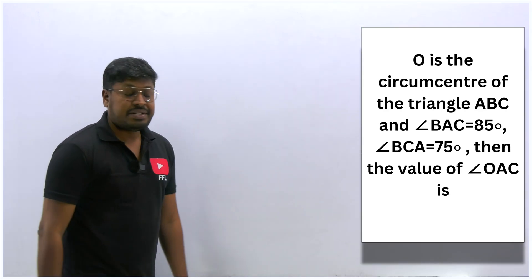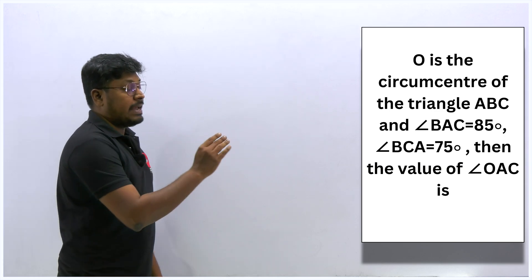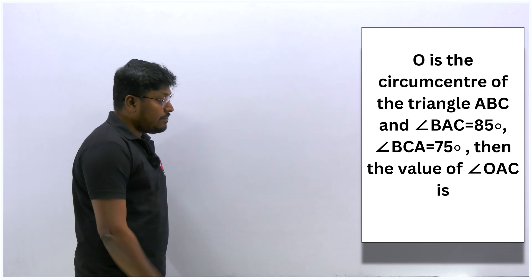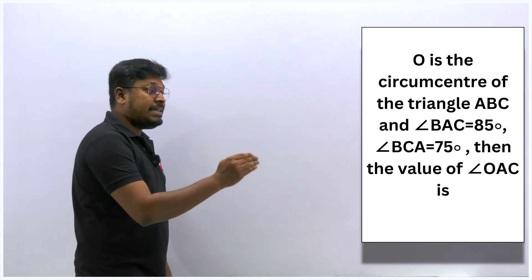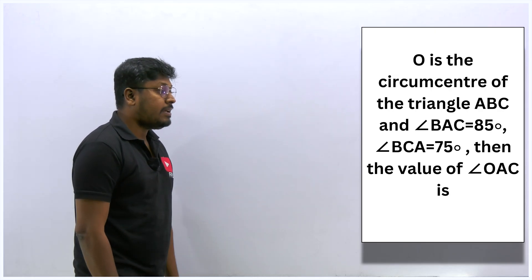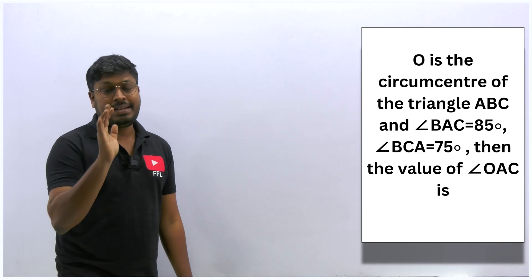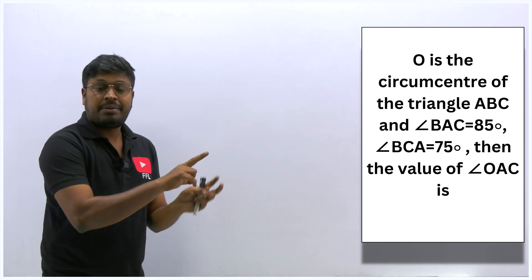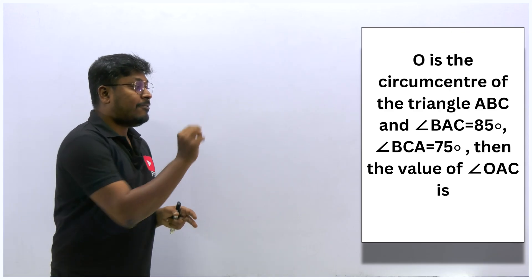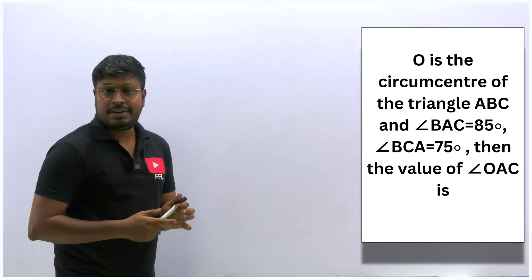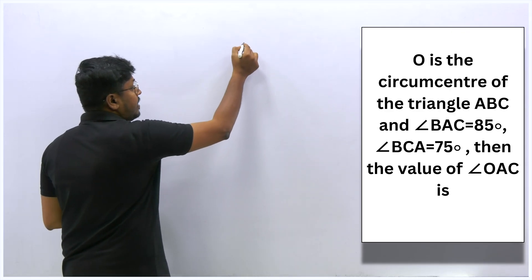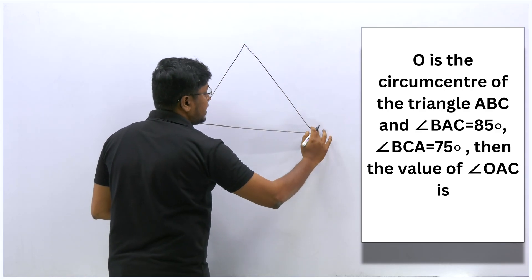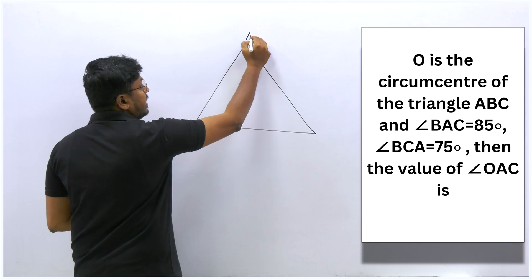Question 2: O is the circumcenter of triangle ABC. Angle BAC = 85° and angle BCA = 75°. Find angle OAC. Draw a diagram of triangle ABC with circumcenter O.